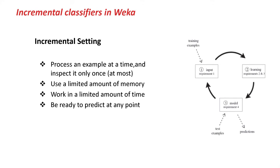Let's look at the incremental setting in more detail. The idea is that we process one example at a time — only one example, not a full data set. We use a limited amount of memory because we don't store all the data in memory. We work within a limited amount of time, so we need to be very fast, and we are ready to predict at any point. In the batch setting, we process all the data and are only ready to predict after finishing building the classifier.